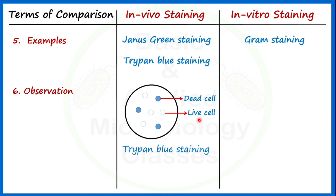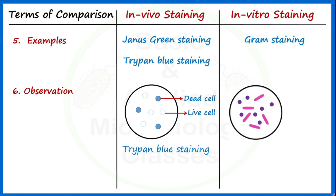For in vitro staining, Gram staining is a good example. Gram staining helps determine the size, shape, and arrangement of bacterial cells, and differentiates between groups of bacteria such as Gram-positive and Gram-negative bacteria.